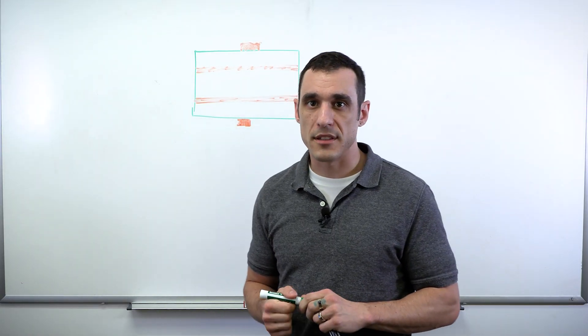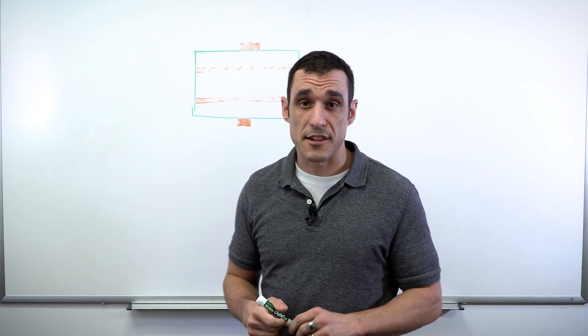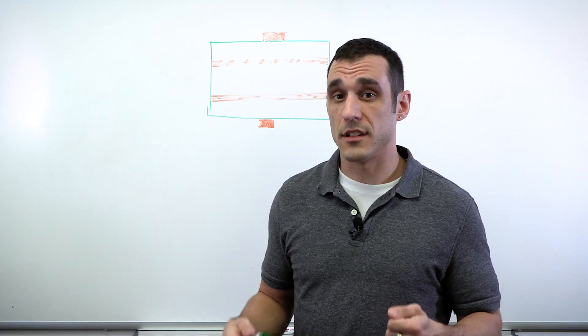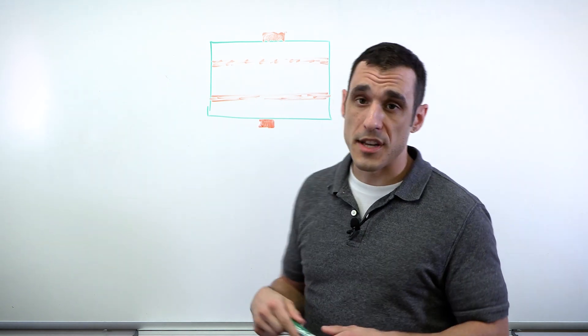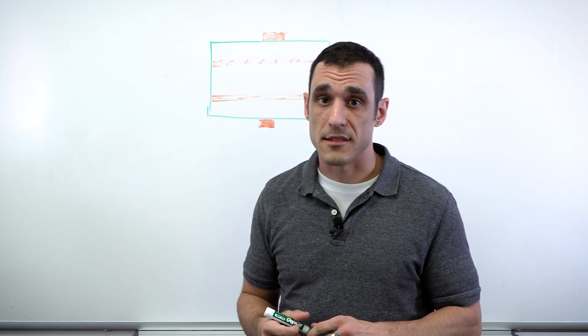To get started getting to a 50 ohm impedance, we need to actually start with the layer stack up design. Then once you've figured out what your layer stack is going to be, you can design the trace width in order to get to a 50 ohm impedance.